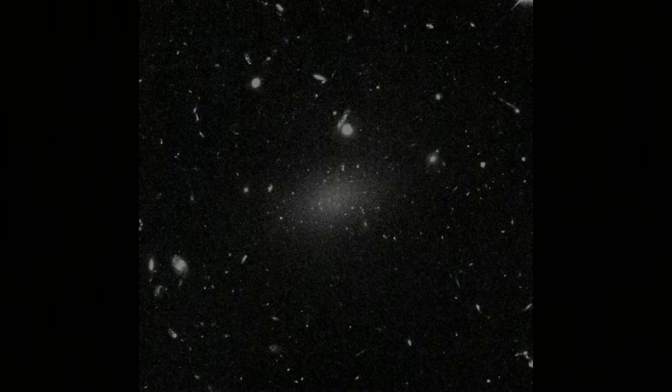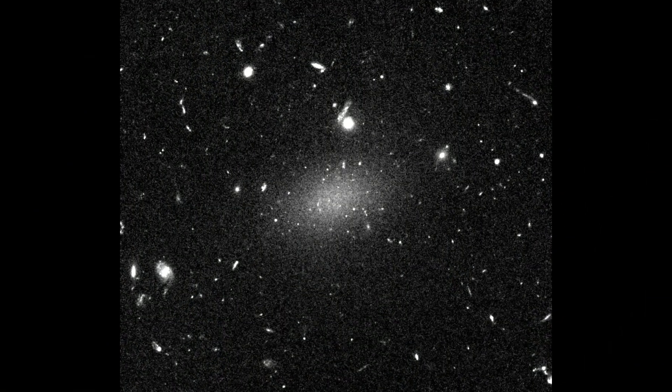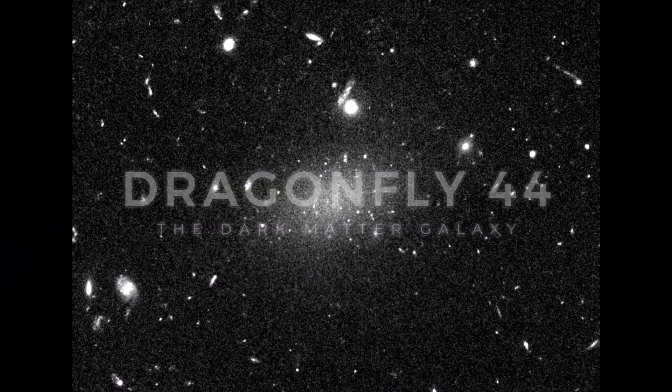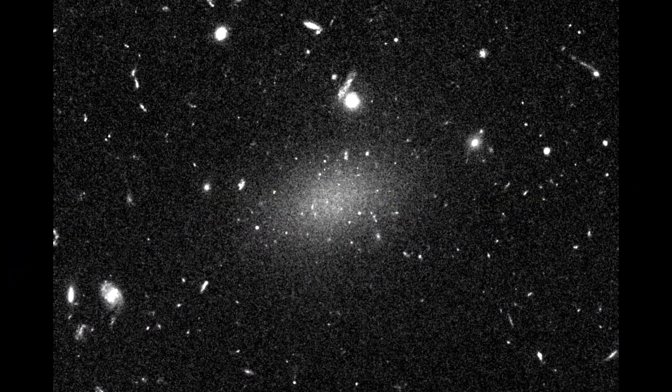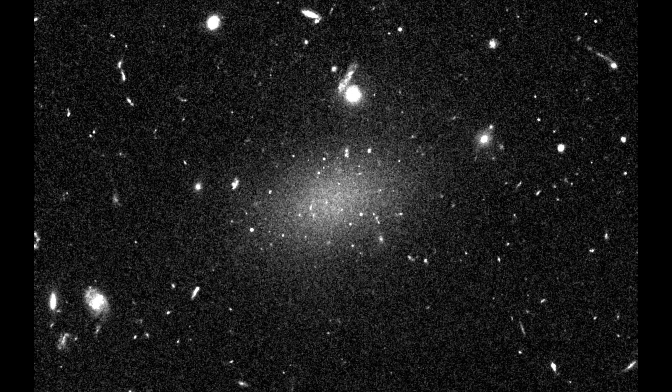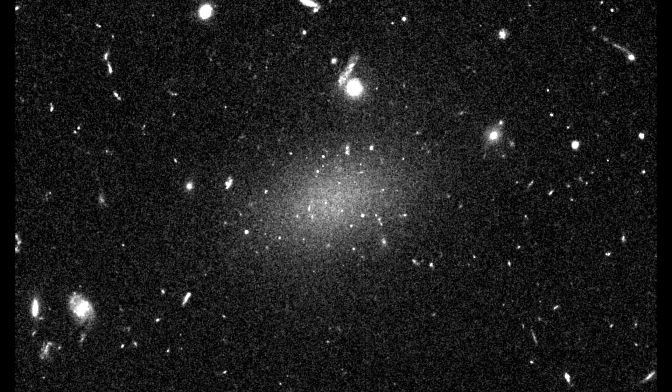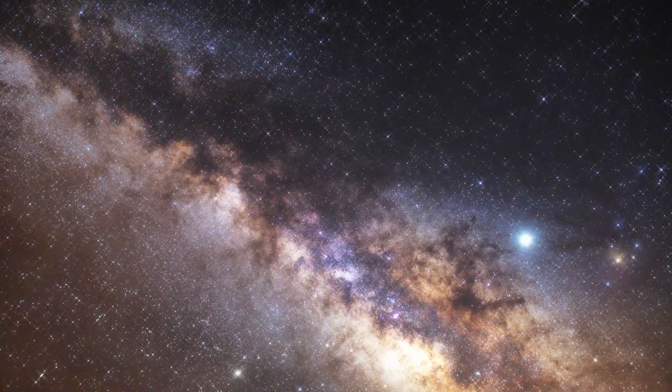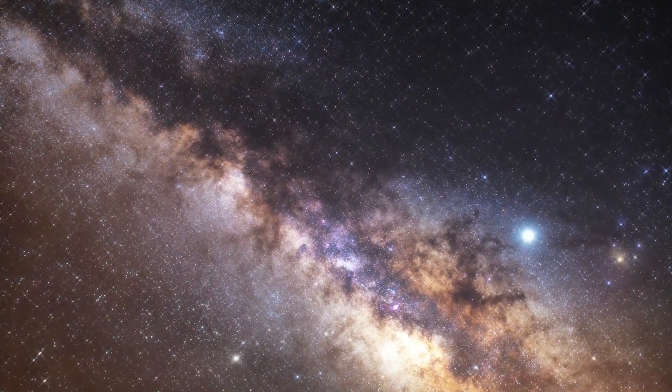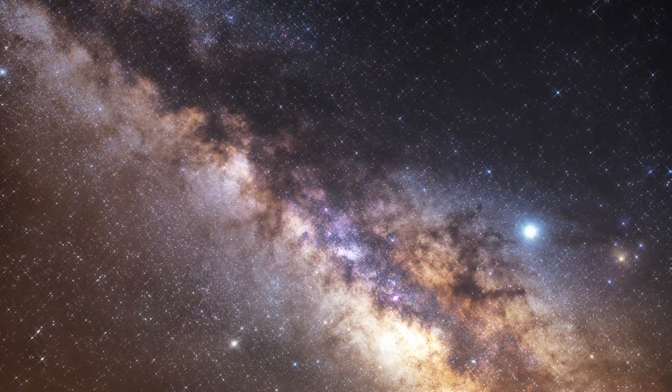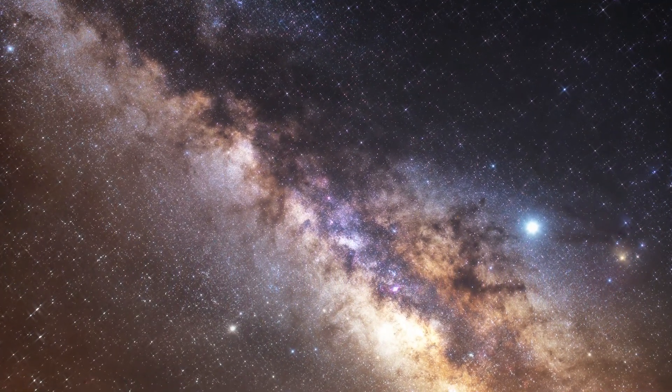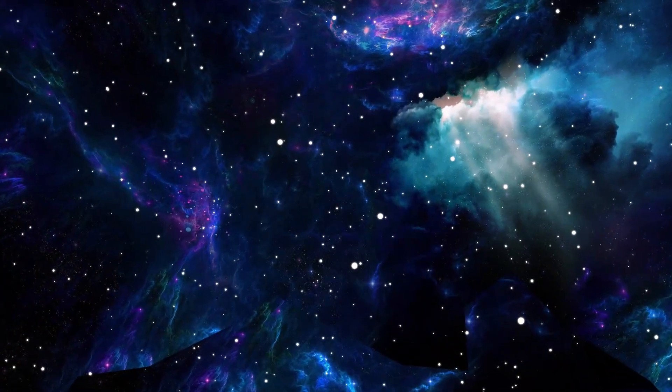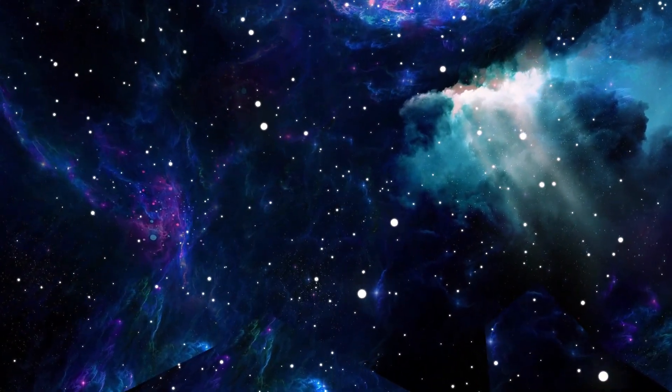Another interesting place in our universe to take note of is the Dragonfly 44 galaxy, which 99.99% of is composed of dark matter, leaving only one hundredth of a percent of the galaxy as ordinary visible matter. First detected in 2015 in the coma cluster, the Dragonfly 44 galaxy is about the size of the Milky Way galaxy. However, it only emits one percent the amount of light our galaxy emits.